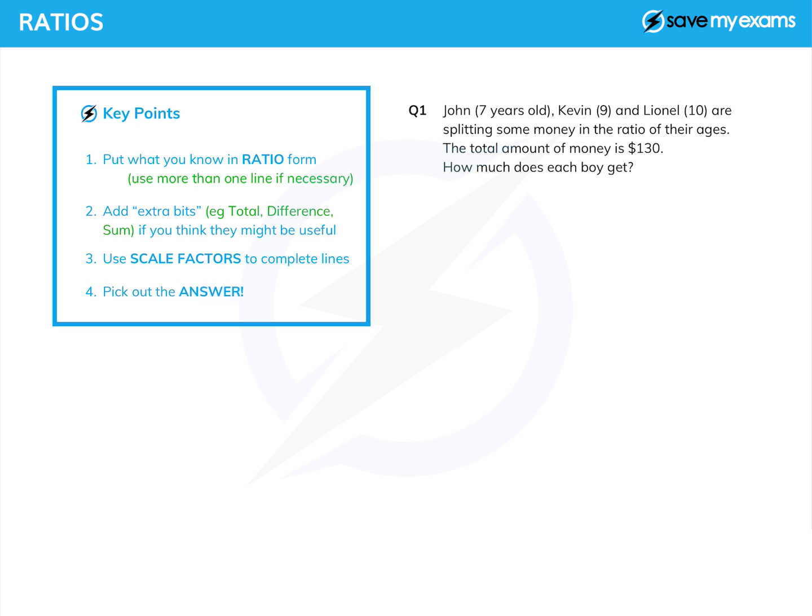Let's have a go. We have John, Kevin, and Lionel are splitting some money in the ratio of their ages, and we're given their ages here. We're also given the total amount of money, and we're asked how much does each boy get?